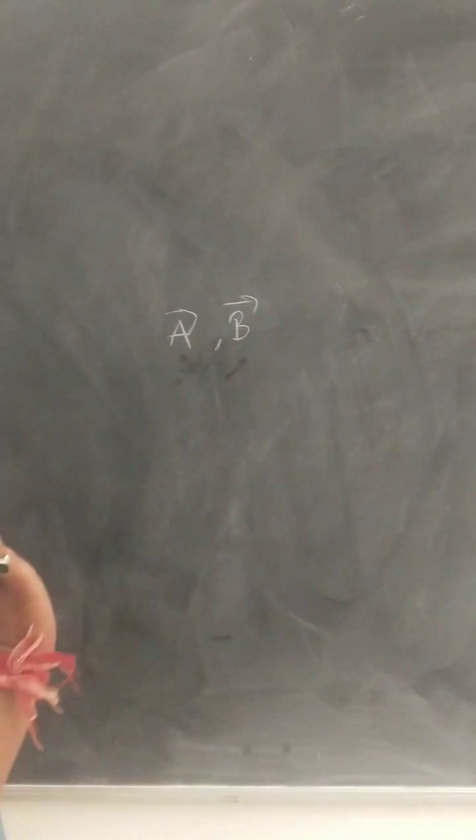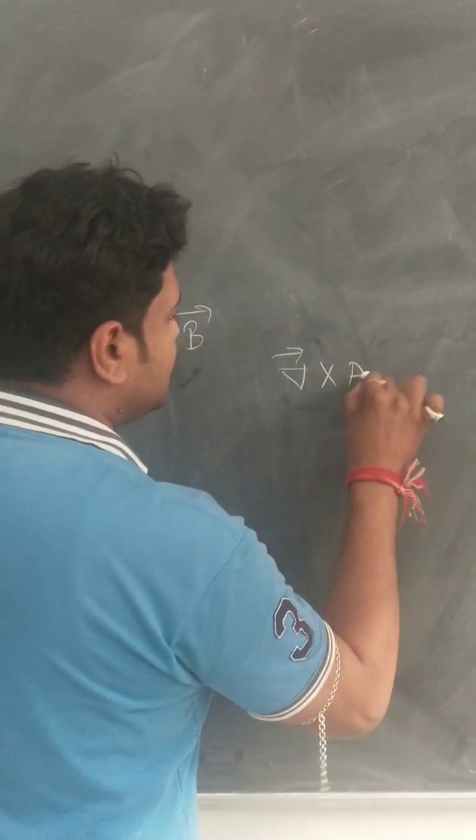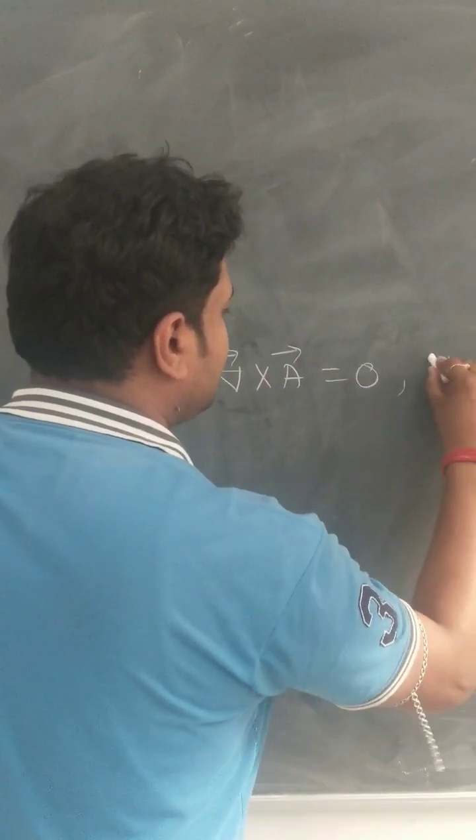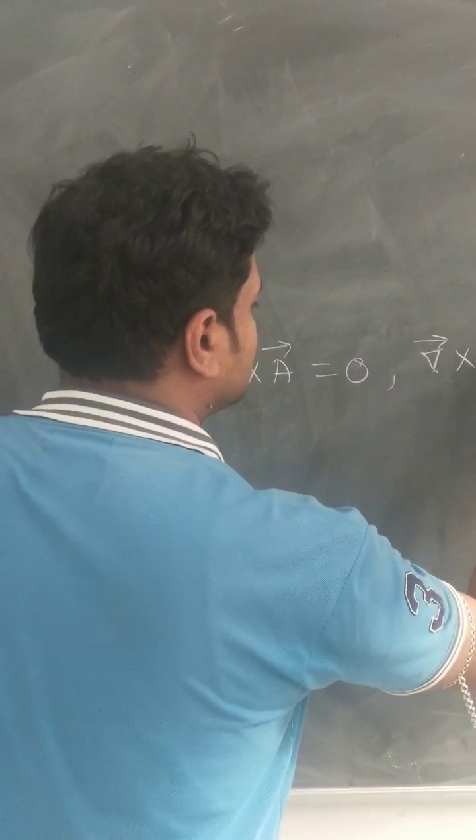So, as A vector and B vector are conservative vectors, so curl of A vector is equals to 0, and curl of B vector is equals to 0.